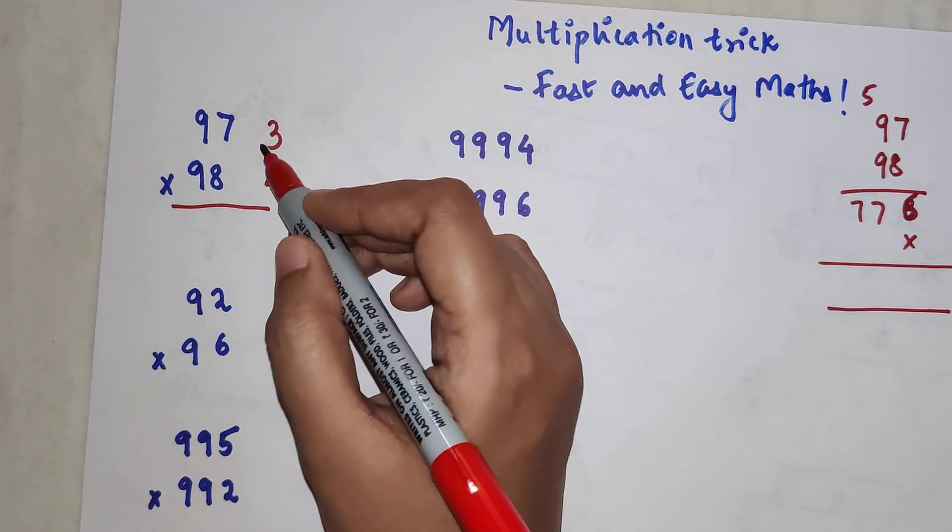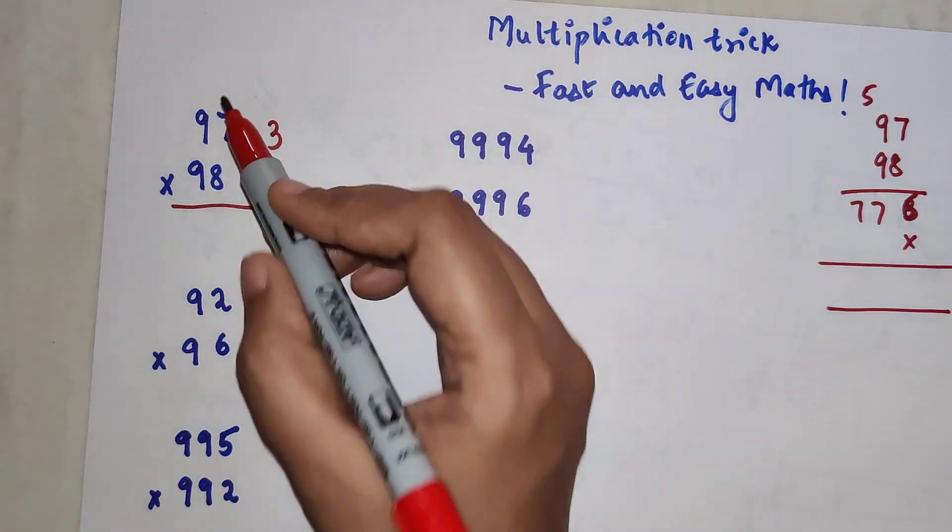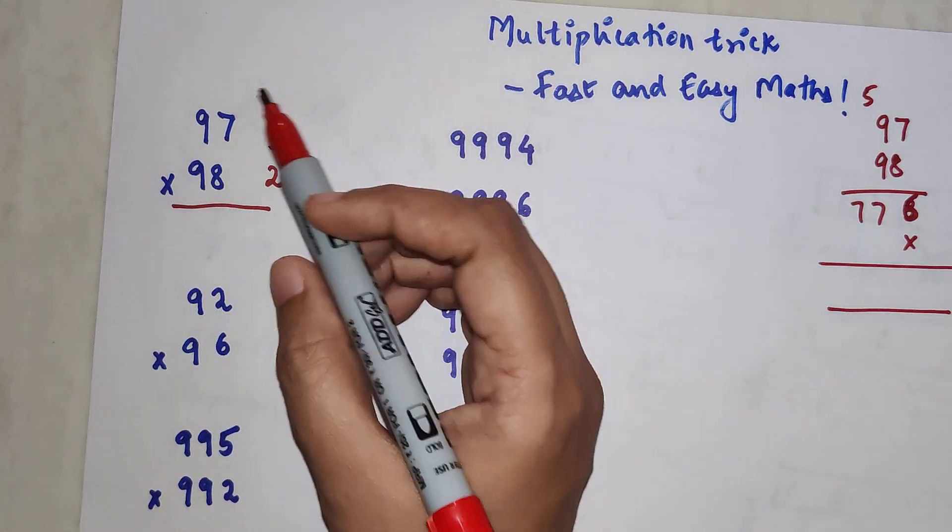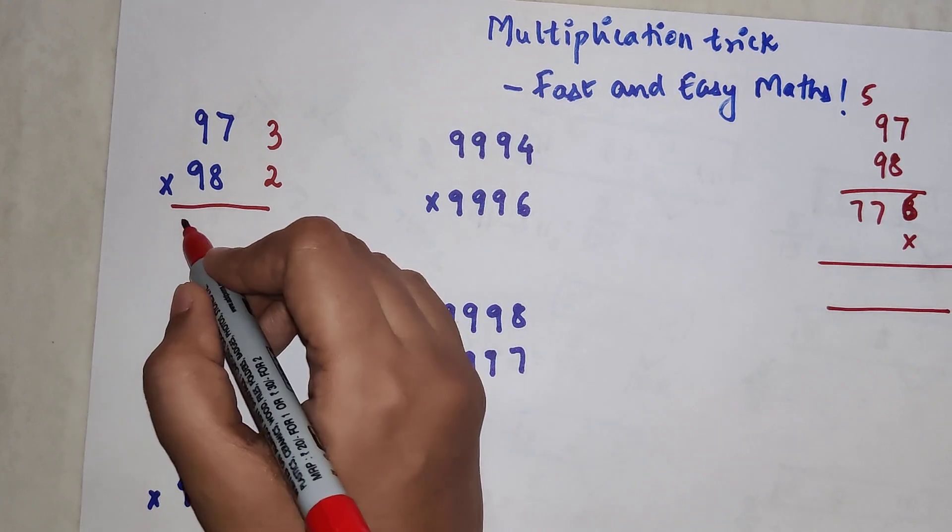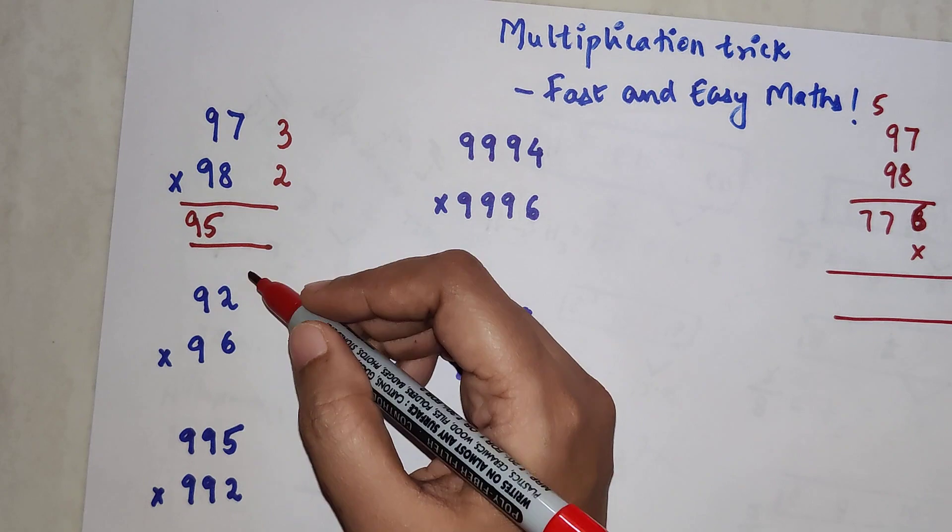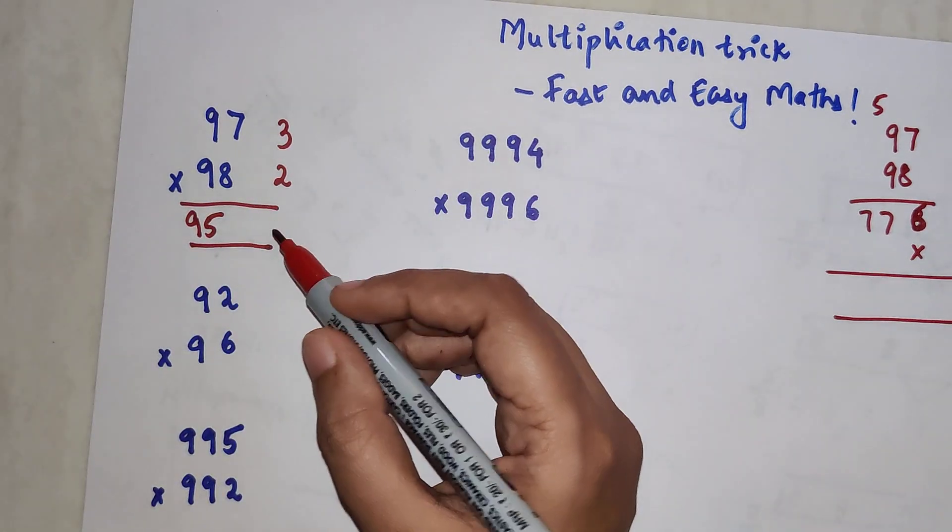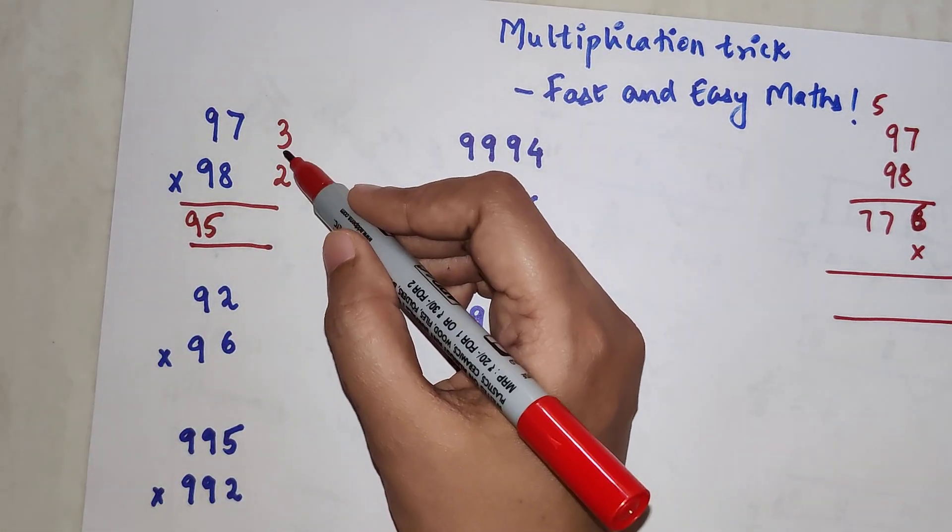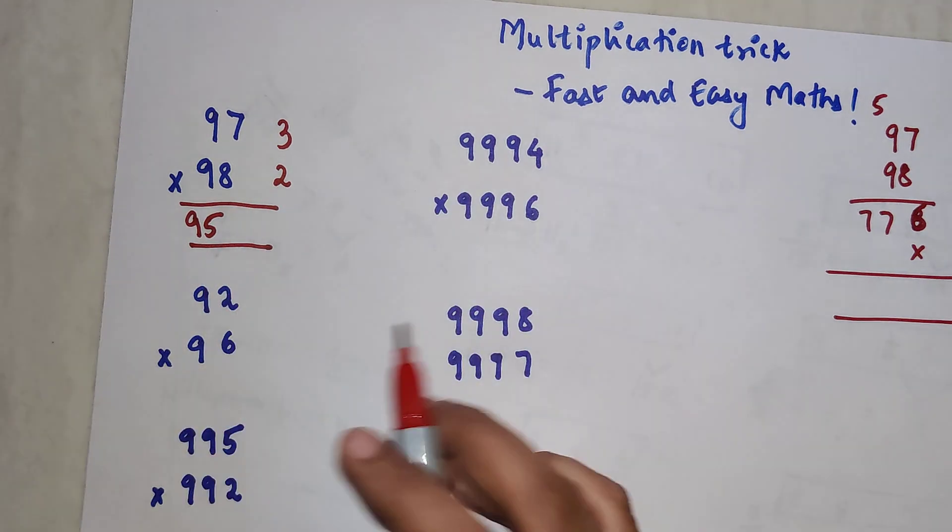98 minus 3 gets you 95. Similarly, 97 minus 2 gets you also 95. Now this is the first part of your answer. To get the second part, just multiply the differences: 3 into 2 is 6.